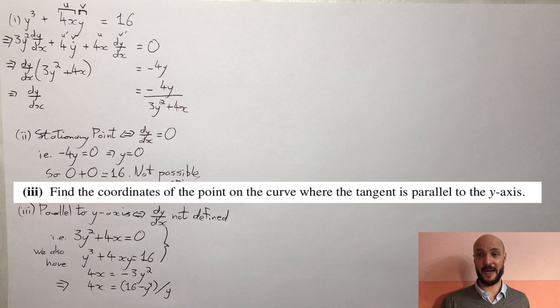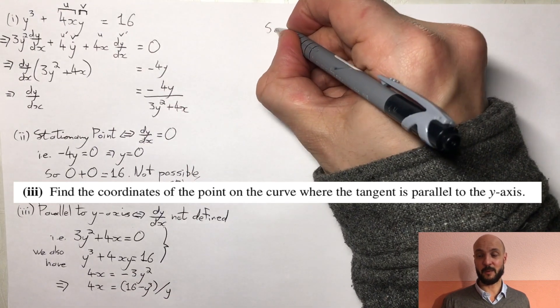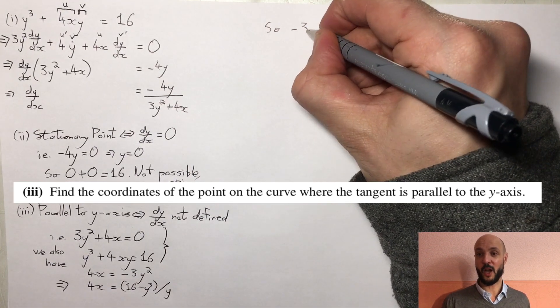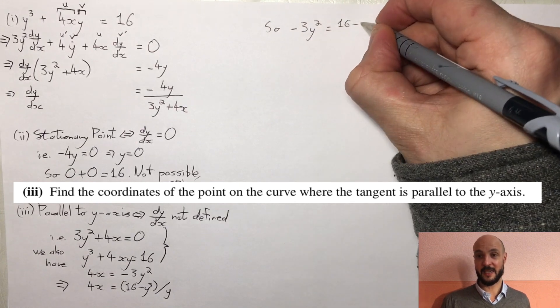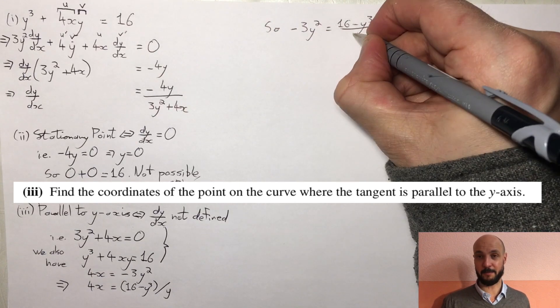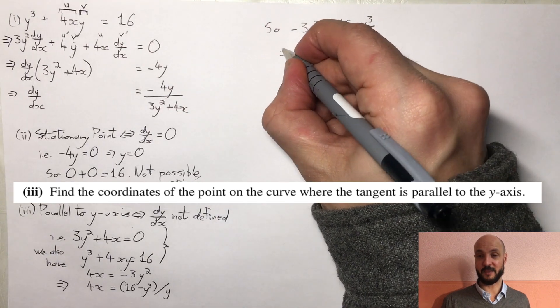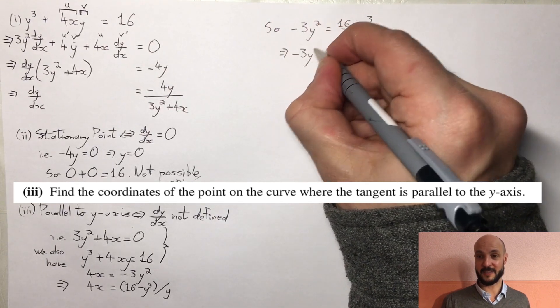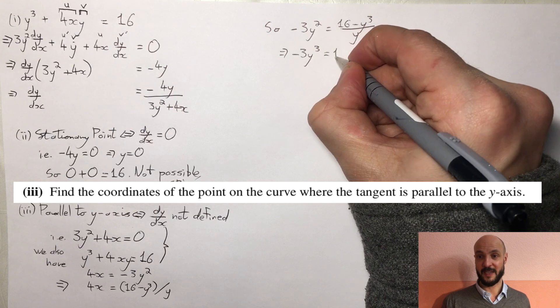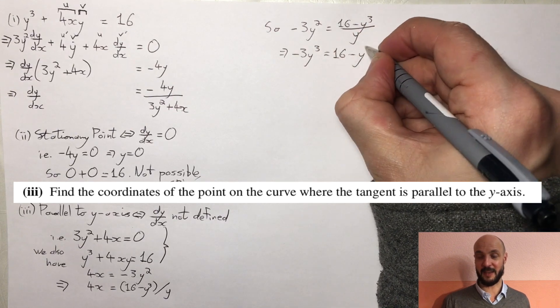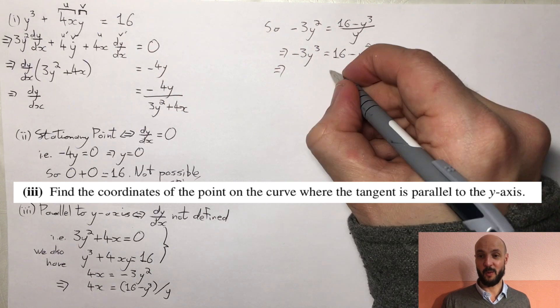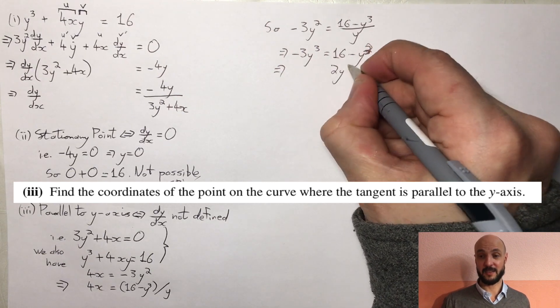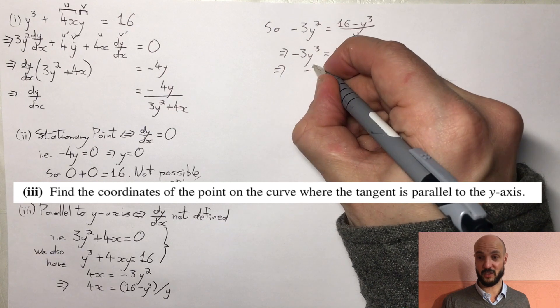Now the left-hand side is the same on both so we can say those two right-hand sides are equal to each other, so we've got minus 3y squared equals 16 minus y cubed over y. Now we've got an equation just in y, straightforward to solve. We can multiply both sides by y to give us minus 3y cubed equals 16 minus y cubed. Then we gather our y cubes together on the right-hand side to give us 2y cubed equals minus 16, so y cubed equals minus 8, so the only possible value of y is minus 2.